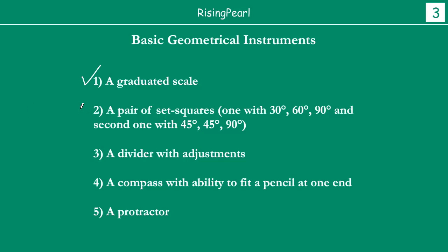Uske baad, Dostho, we are talking about a pair of set squares. Set squares, Dostho, hain — those triangle-like chizein aapke geometry box mein. Yahan pe usually you have two types of these set squares. Ek hai with the corners having angles 30, 60, 90 — aur doosri wali set square hai, unki corners will have angles 45, 45, 90.